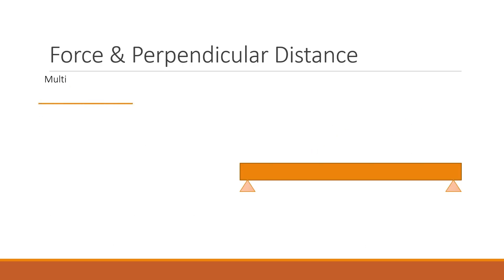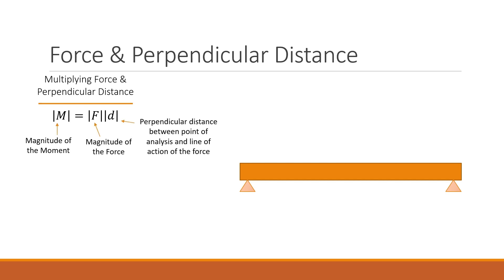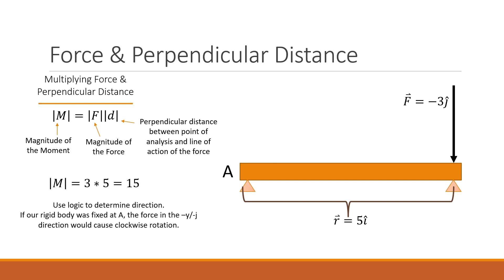The last method is to multiply the force and the perpendicular distance. The perpendicular distance is if the force's line of action were to go on forever, what would be the shortest distance between the point of analysis and the force's line of action. The shortest distance is the perpendicular distance. You'll notice it hits that force's line of action perpendicular to the force's line of action, meaning it has a perpendicular unit vector.